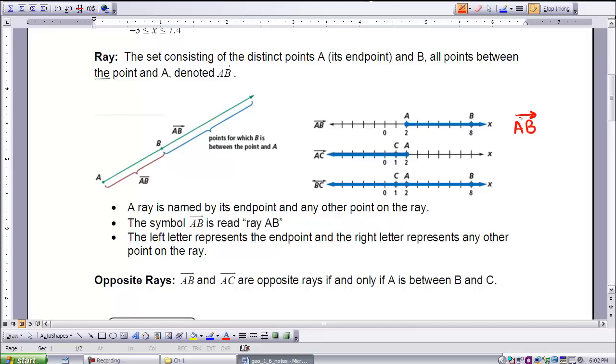We also have a pair of what we call opposite rays. Ray AB and ray AC are opposite rays, if and only if A is between B and C. So in order for A to be between B and C, it has to be on the same line, and it is, and it is between C and B on that line.